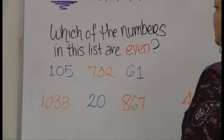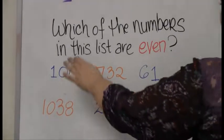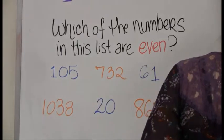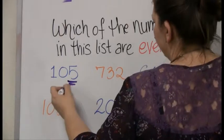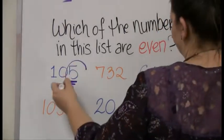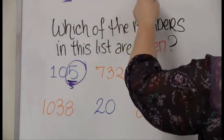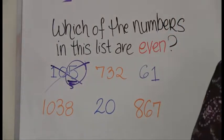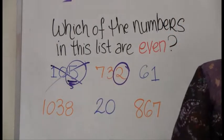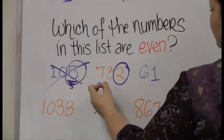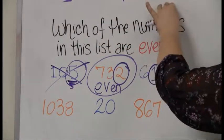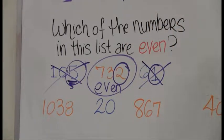You're going to see something similar to this in your book. It says which of the numbers in this list are even. Taking a look at the number 105, I look right at its final digit, right at its butt, and that is not a 0, 2, 4, 6, or 8, and so this is not an even number. 732 ends in 2, hey that's on our list, that's an even number. 61 ends in 1, not on our list, therefore it is definitely not even.